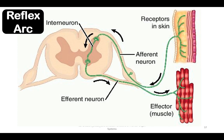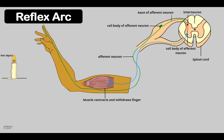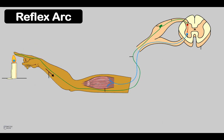The reflex arc pathway goes from receptors in the skin, to the afferent neuron, then to the interneuron, then the efferent neuron, and finally to the effector, for example a muscle. Here is another example of a reflex arc — look at the yellow dot to see how the reflex arc works.